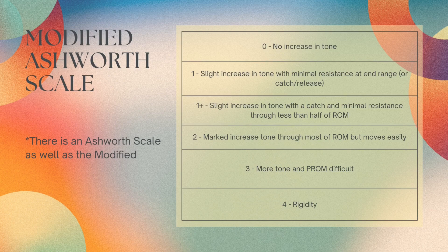Next we have the modified Ashworth scale. It's important to note that there is an Ashworth scale as well as the modified. I have provided the modified because that is what is most commonly used. Zero is when there's no tone. One is when there's a slight increase in tone with minimal resistance at end range — that catch and release you may have heard about.